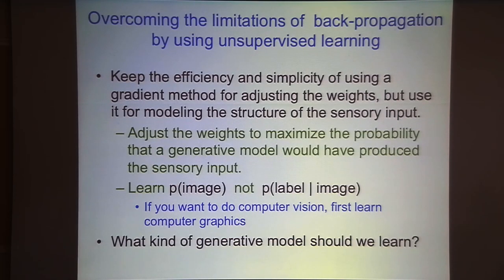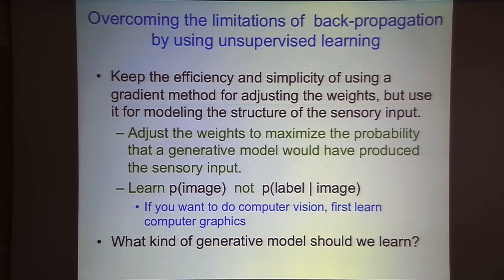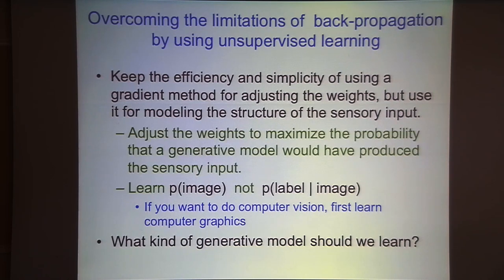Now I want to discuss the move away from supervised learning towards unsupervised learning, which is what made backpropagation work better in the end. Gradient descent learning for big neural networks scales nicely with training data. Instead of using it to model the probability of a label given an image — discriminative learning — we're going to use it to build a model of the image. Each training example gives us far more data that way, since there are only a few bits of information in a label but lots in an image.